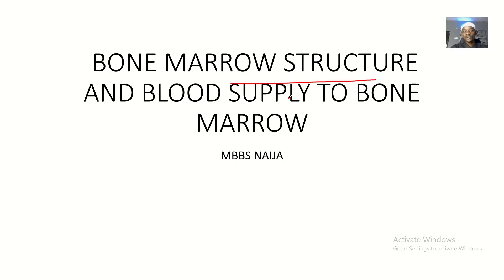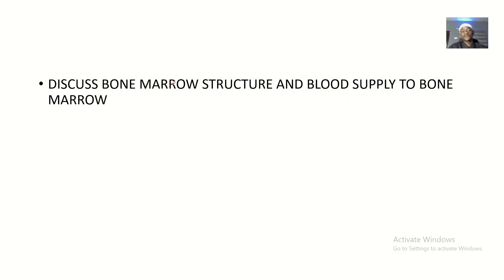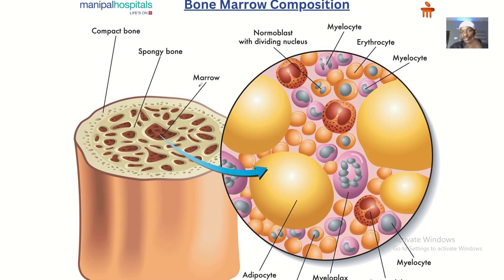Here we'll be talking about the bone marrow structure and the blood supply to the bone marrow. We'll get to see how the bone marrow is arranged, its constituents, its organization. We'll be looking at how blood is being supplied to the bone marrow, and that's through the nutrient artery, which goes through the nutrient canal or the nutrient foramina.